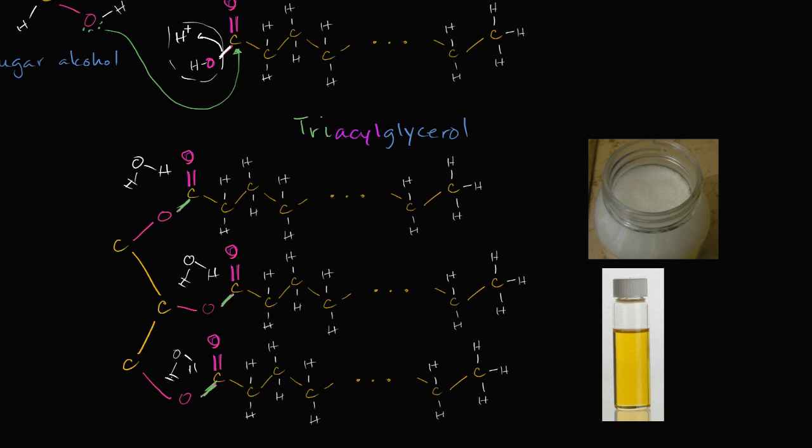Now, what does acyl mean? Well, acyl is a functional group where you have a carbon that's in a carbonyl, that's part of a carbonyl group. It can be bound to an organic chain right over here. I'll just call that R. And then it's bound to something else. And so we have three acyl groups. So, triacyl.